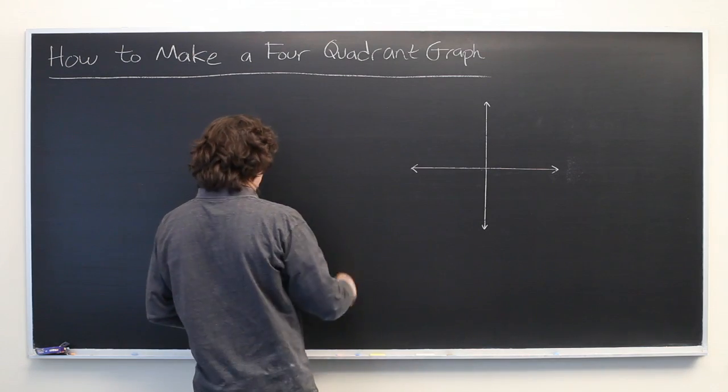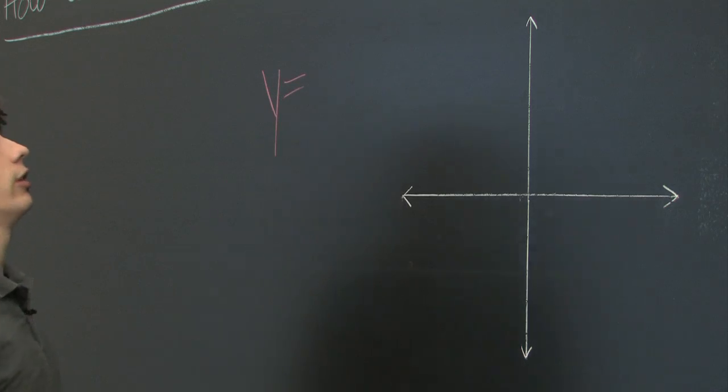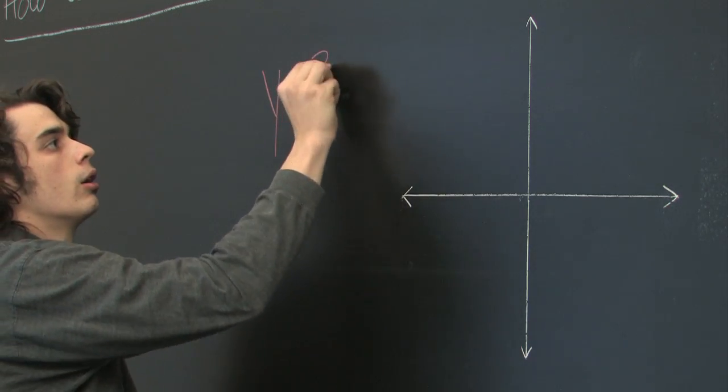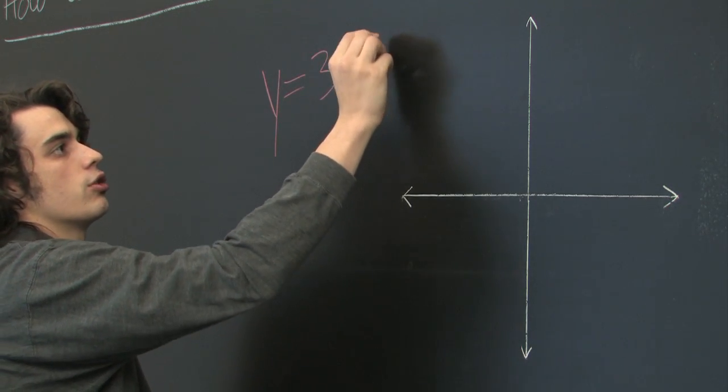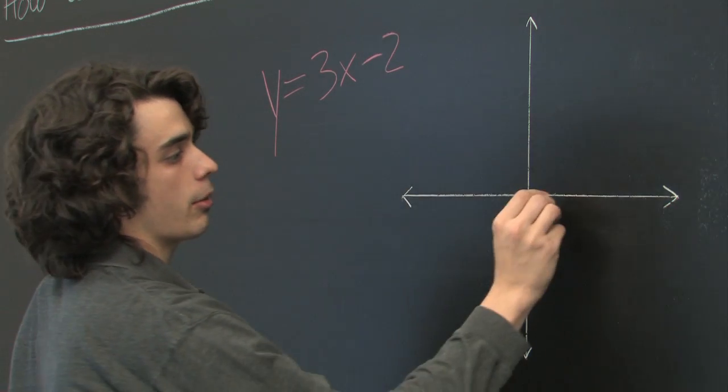So let's go ahead and take a look at some arbitrary linear function. We'll say y equals 3x minus 2. Then we'll go ahead and give ourselves some tick marks.